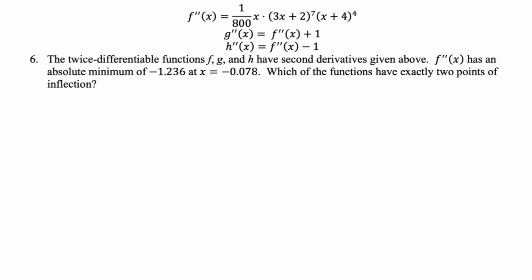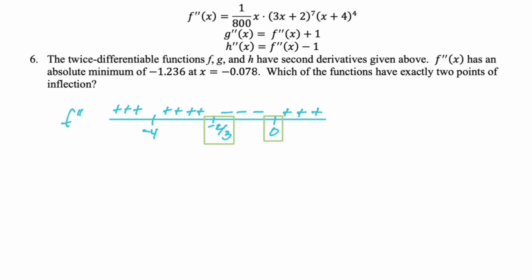Number 6: twice differentiable functions f, g, and h have second derivatives given. f''(x) has an absolute minimum of -1.236 at x = -0.078. Which functions have exactly two points of inflection? Start with f — make a sign chart for f''. Plugging in gives the signs. At x = -4, it's an even-degree factor so no sign change; the others are odd, so sign changes occur. A sign change in the second derivative gives a point of inflection — f has exactly two.